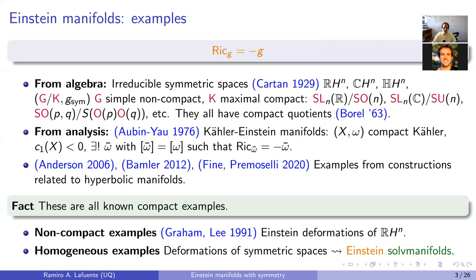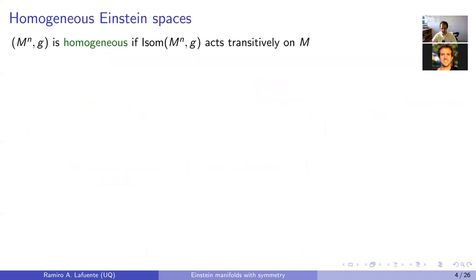It sounds strange at first because symmetric spaces involve simple Lie groups, which are very rigid objects — finitely many in each dimension, completely classified. But there's a way to deform them by looking at these objects as solvmanifolds, which I will discuss in more detail in the following slides.